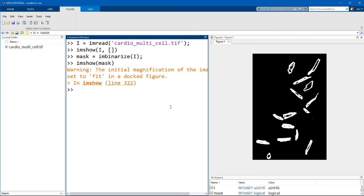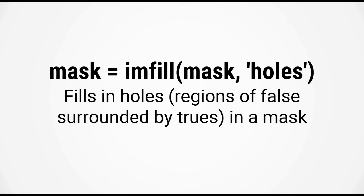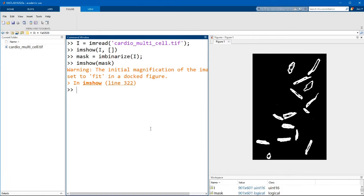We can fix this problem by using the function imfill. The syntax is mask equals imfill(mask, 'holes'). We are using the second argument to tell imfill to automatically fill in holes in the mask, defining holes as regions of false surrounded by trues.